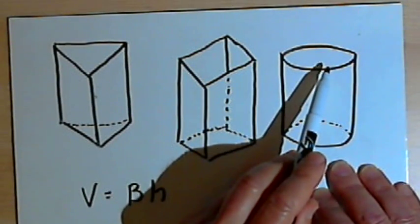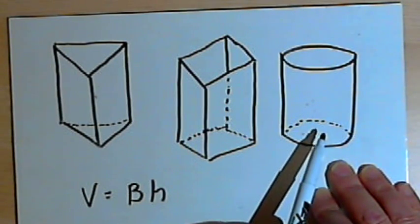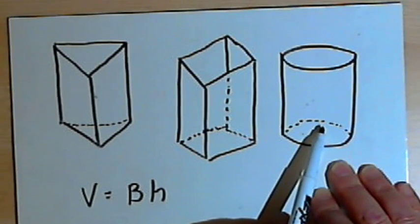And I've got a cylinder. So for a cylinder both of the bases are going to be circles that are parallel to each other and also congruent with each other.